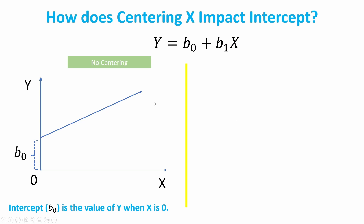On the left-hand side is without any centering — that's exactly the same figure we just saw. There's one additional piece of knowledge: the regression line always passes the point of the mean of x and mean of y. Suppose the mean of x is three and the mean of y is four — the regression line will pass the point three and four. This helps us understand how centering x impacts the intercept.